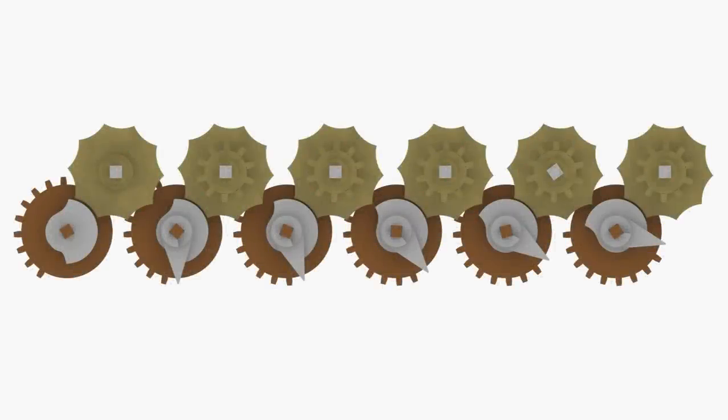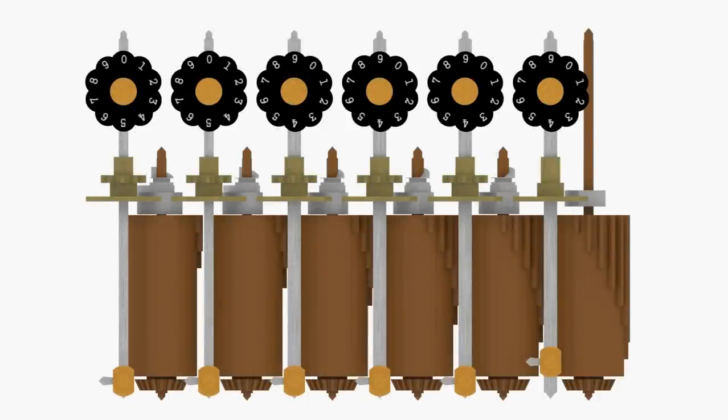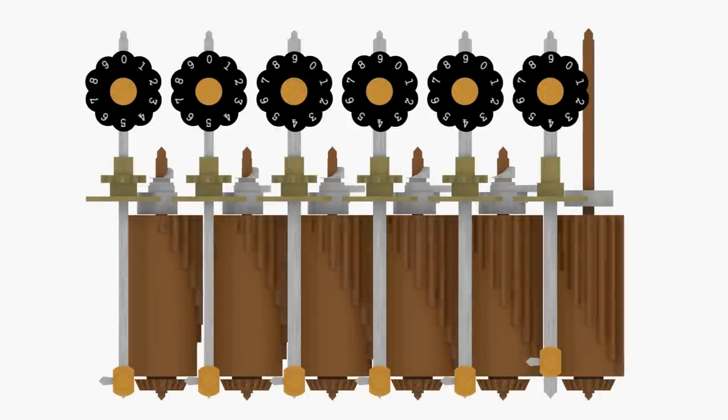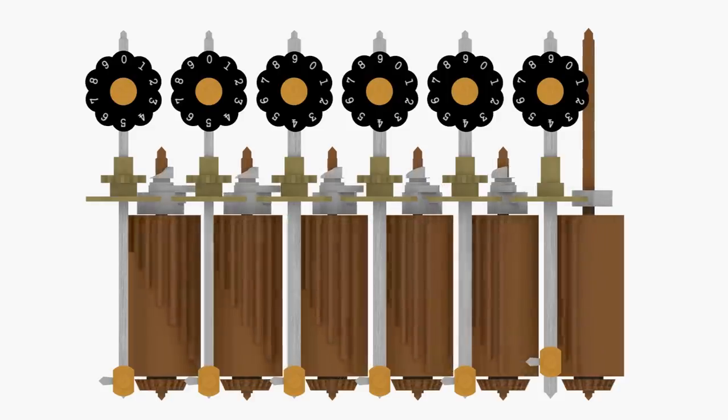The resting angle of each Leibniz wheel is offset by 18 degrees from its lower order neighbor to ensure any lower order carry operation has completed before the higher order carry operation begins. Here you see how this allows a carry to ripple up the columns when we add 1 to the value 9,999.